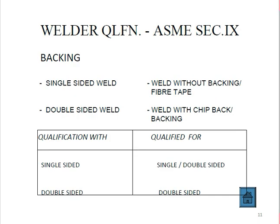Backing requirements: a single-sided weld is a weld without backing; a double-sided weld uses backing or back gouging. If a welder is qualified with single-sided (without backing), they are qualified for both single-sided and double-sided. If qualified with double-sided (with backing) only, they are qualified for double-sided only — not for single-sided without backing.